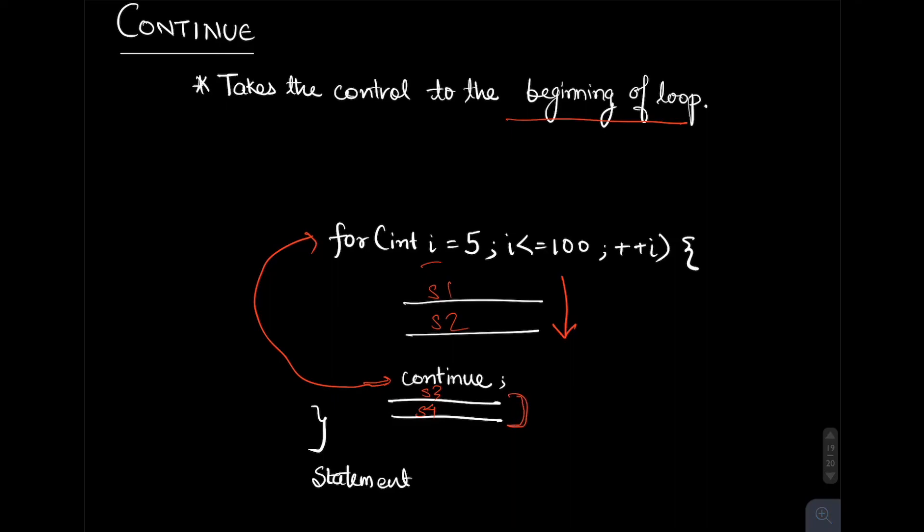You might be wondering, if these statements are always getting skipped, why write them? Generally continue and break are written within an if condition. Only when a specific condition evaluates to true do we break or continue the loop, else the normal flow of the loop continues to persist.